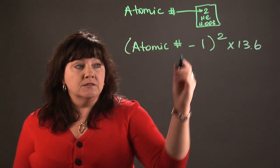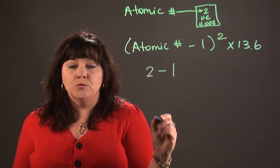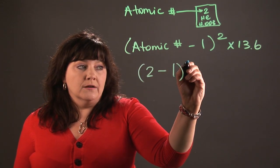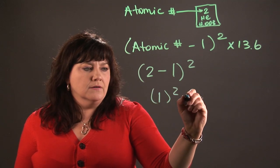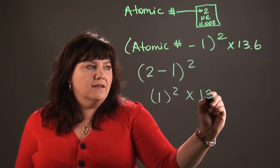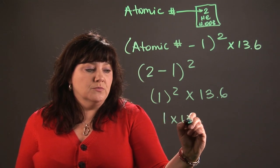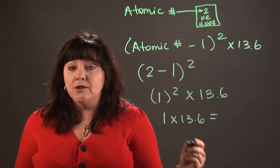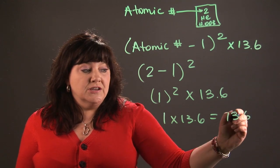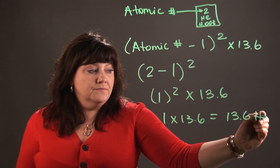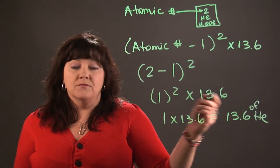So in the case of helium, whose atomic number is 2, we would subtract 1—2 minus 1. We would square that, so 2 minus 1 is 1 squared. We would multiply that by 13.6. Now 1 squared is 1 times 13.6, and that would measure ionization energy in electron volts. So the ionization energy of helium would be 13.6 electron volts.